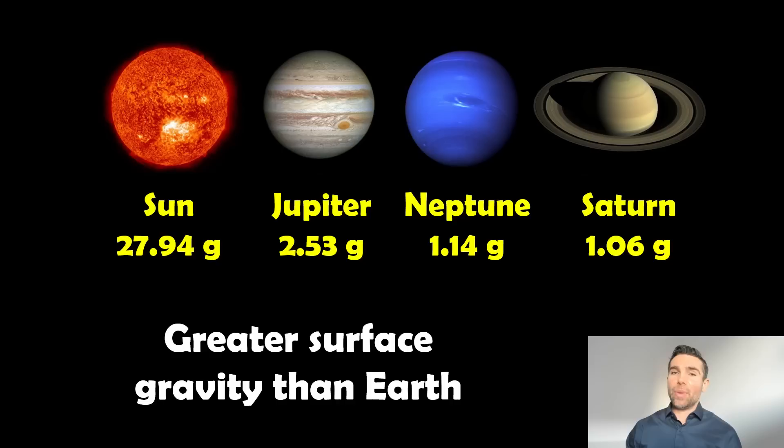Jupiter, again, big object, big mass. And then as we get towards Neptune and Saturn, they have quite low density. So despite being large planets, they have quite, well, they're physically quite big and they have quite high masses compared to the Earth. They have quite low density in comparison to the Earth. So it means their surface gravity is quite low for the size of object that they are.